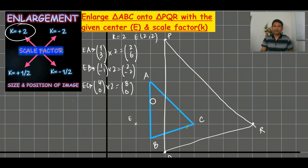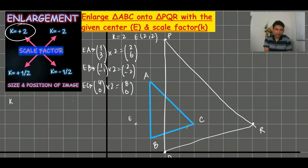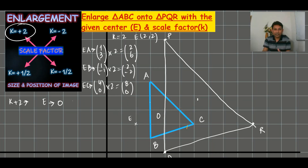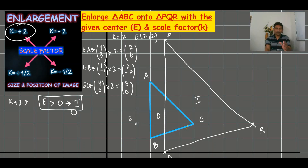When K is positive two, center and object are on one side, and the image is on the same side. Please note this down: when K is positive, the image is on the same side as the object relative to the center — not on the other side.